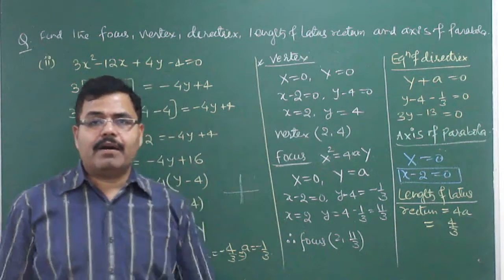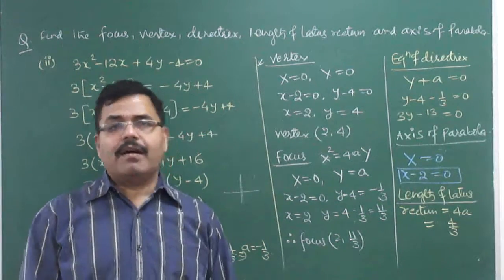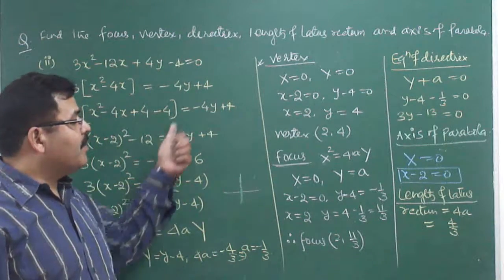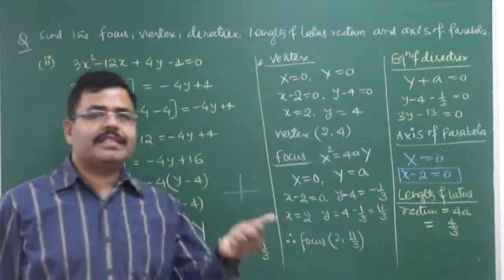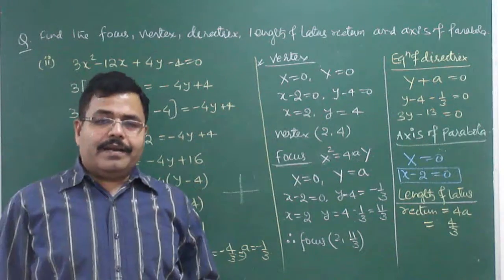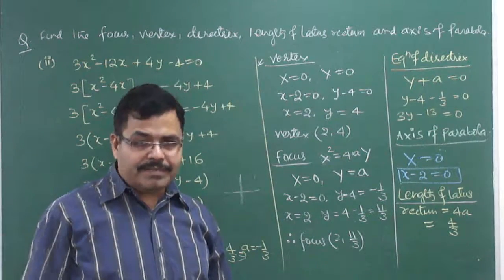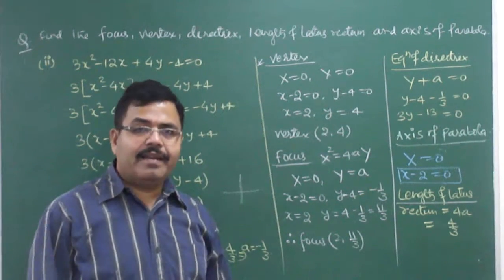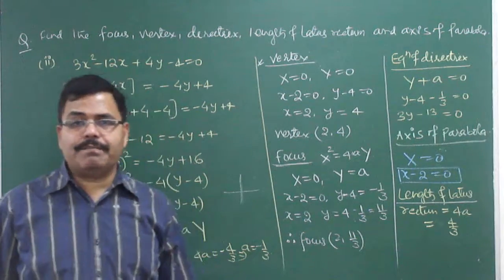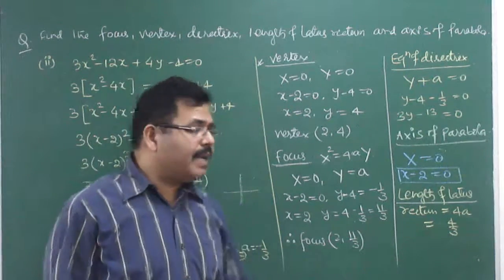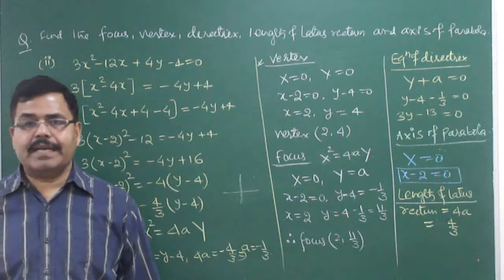Once you reduce the equation to one of the general forms — either y² = 4ax or x² = 4ay — you can derive all the coordinates and equations for vertex, focus, directrix, axis, and latus rectum. If you don't understand due to the speed, please watch again. For any confusion, write to us at our email: Arjun Singh Academy at gmail.com.